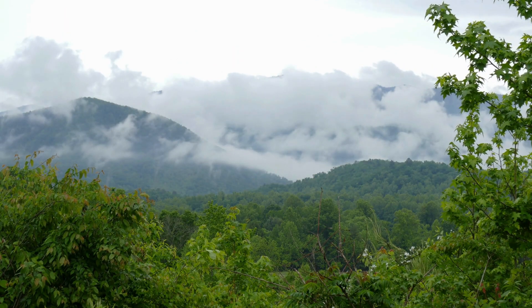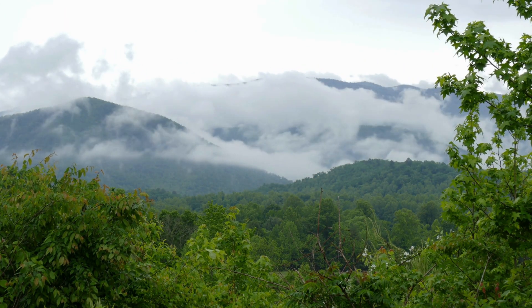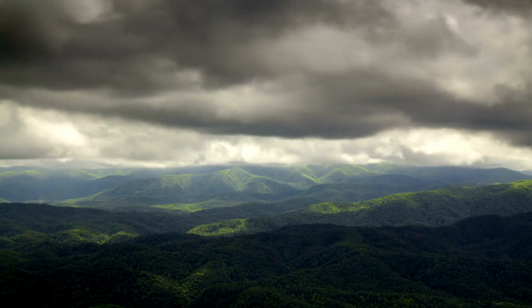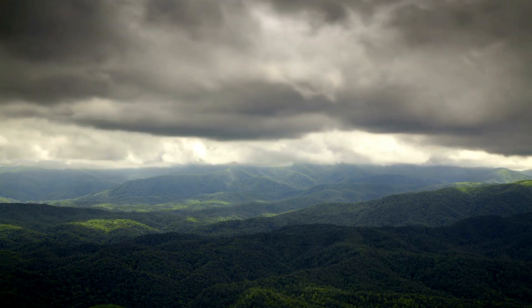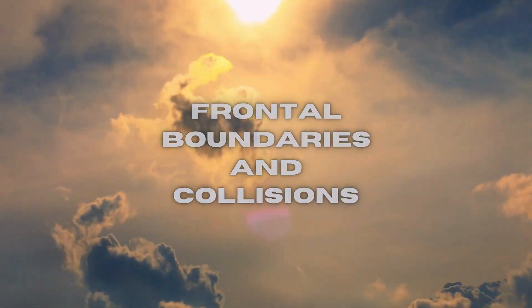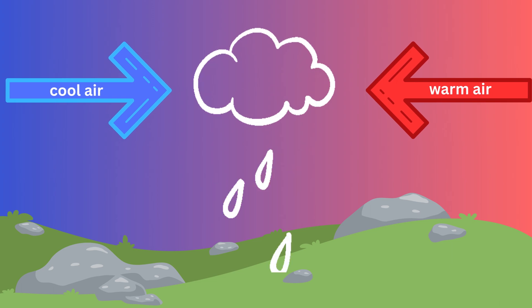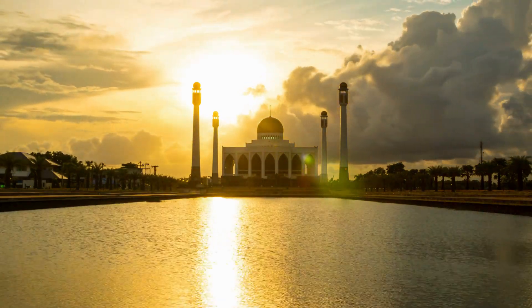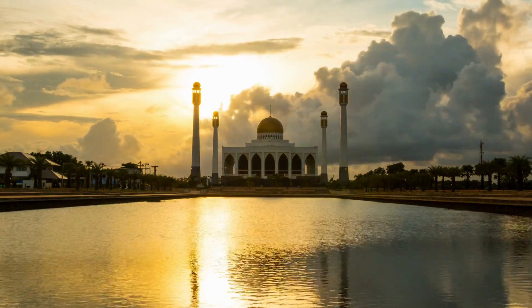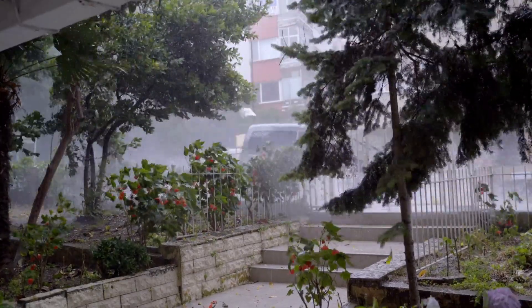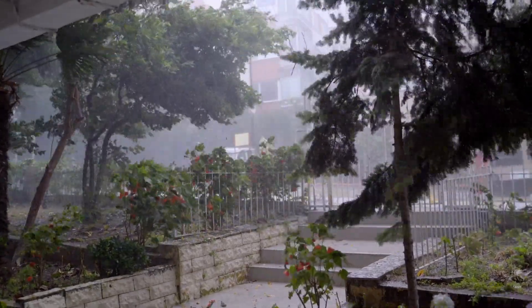These convection currents can be enhanced by varying terrain, such as mountains, which can force air to rise, further strengthening storm development. Sometimes summer storms are triggered when different air masses collide. When a cooler air mass encounters a warmer moist air mass, the warm air is forced upwards, leading to cloud formation and often precipitation. These boundaries or front lines are often the sites of intense storm activity.